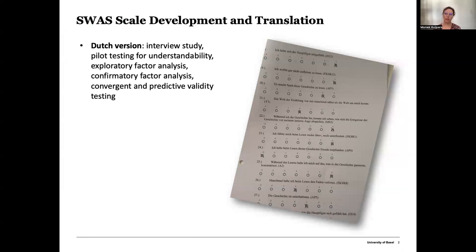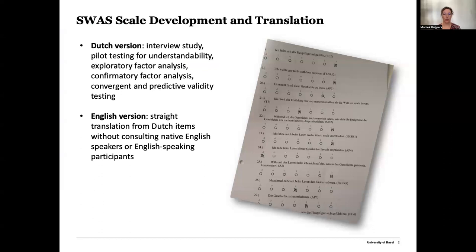Then, for the purposes of publishing our results in international journals, we translated those items to English. The scale was then used in English-language empirical literary studies, without our translation ever really being tested by native speakers or using measures of convergent or discriminant validity.